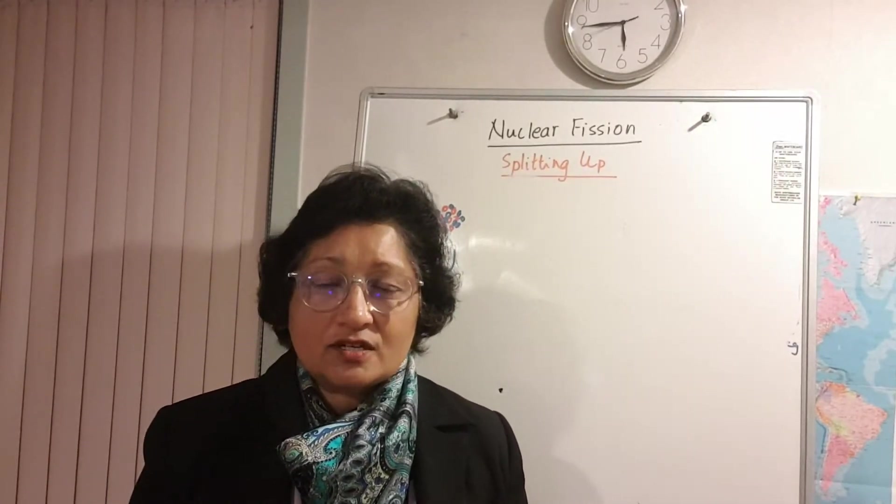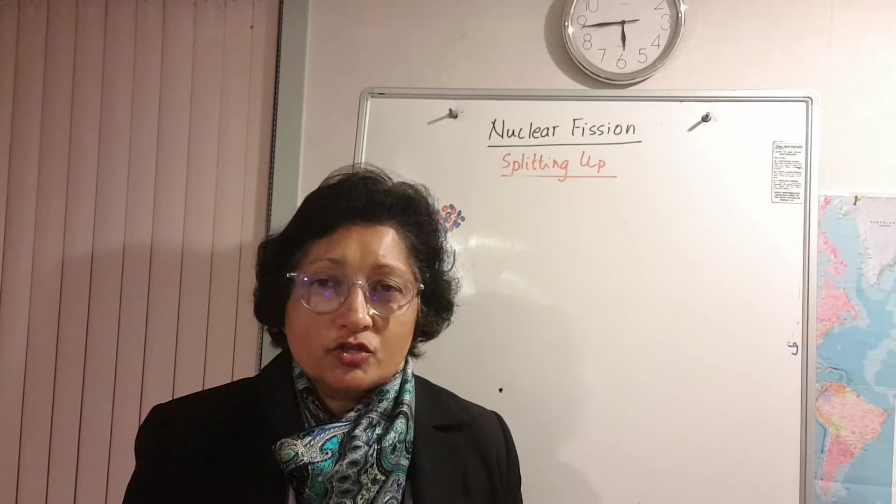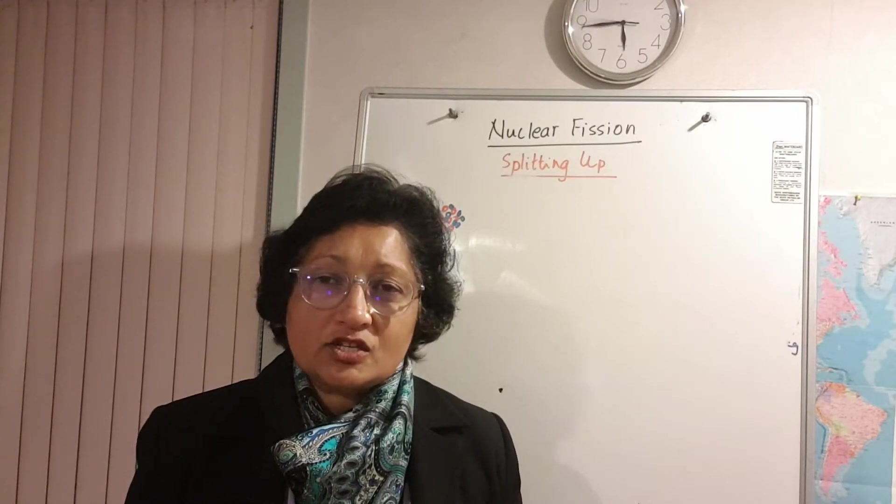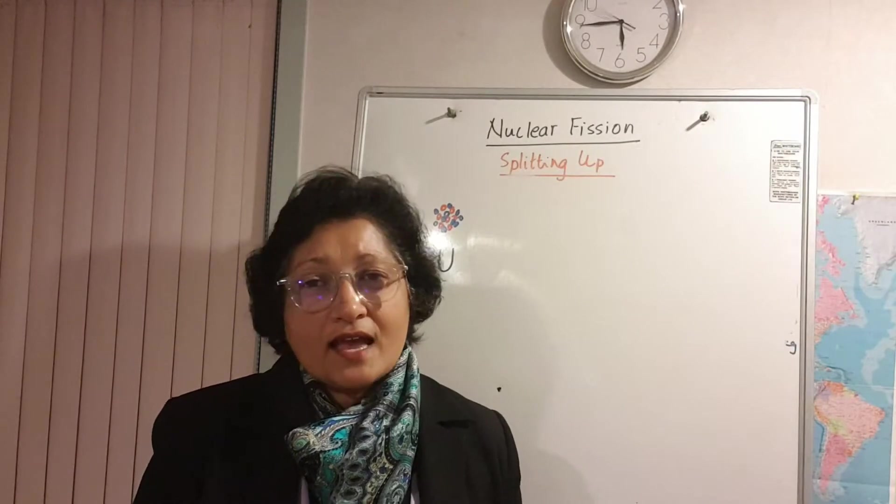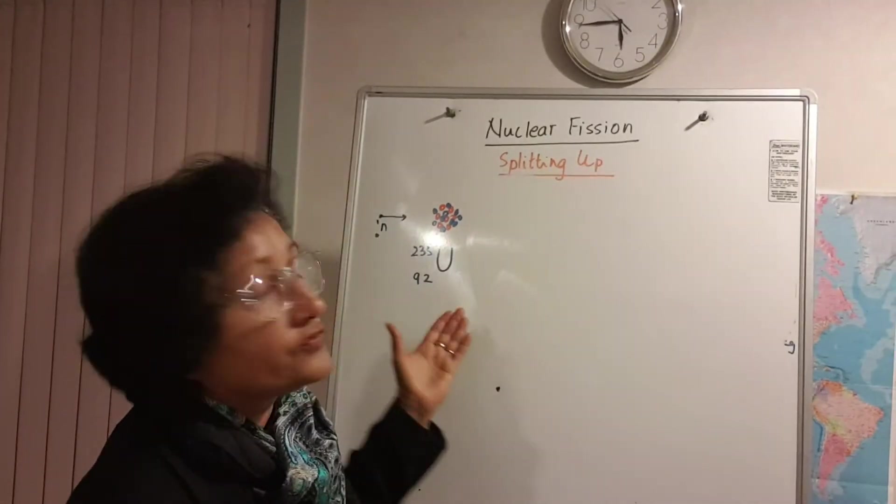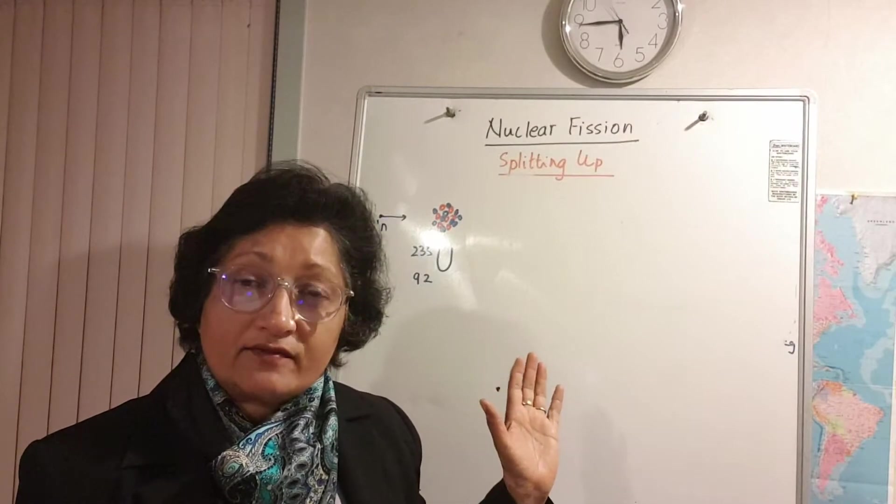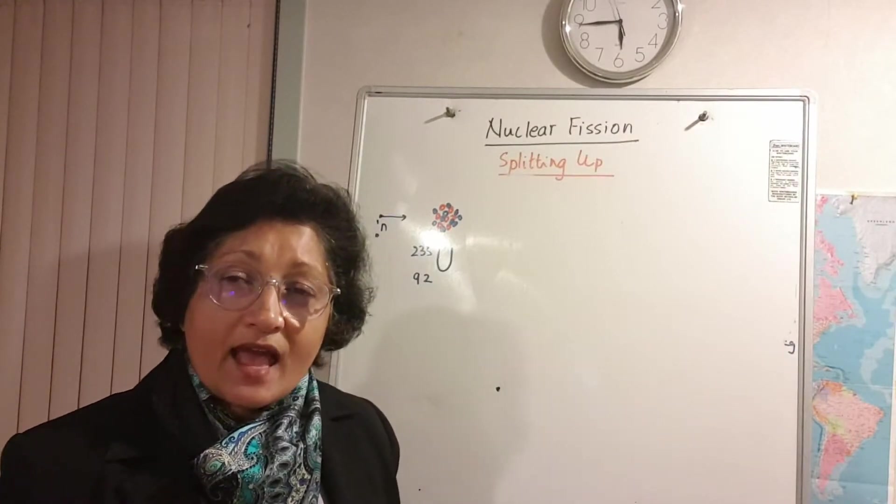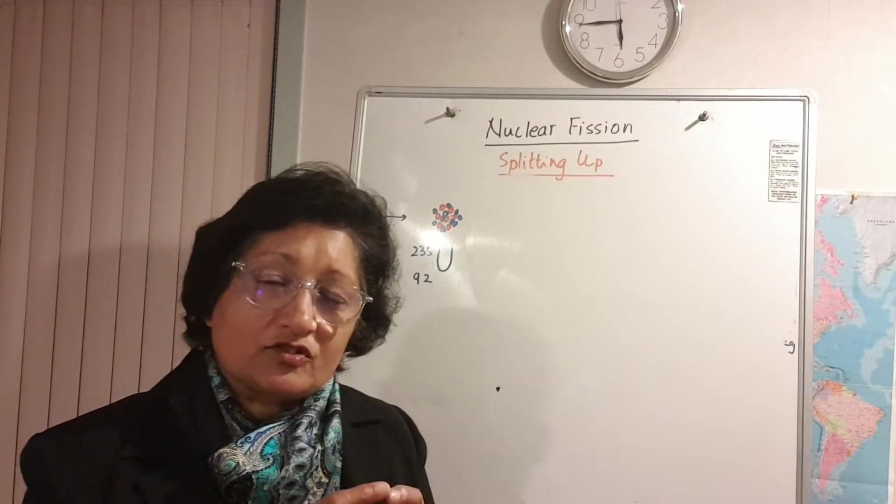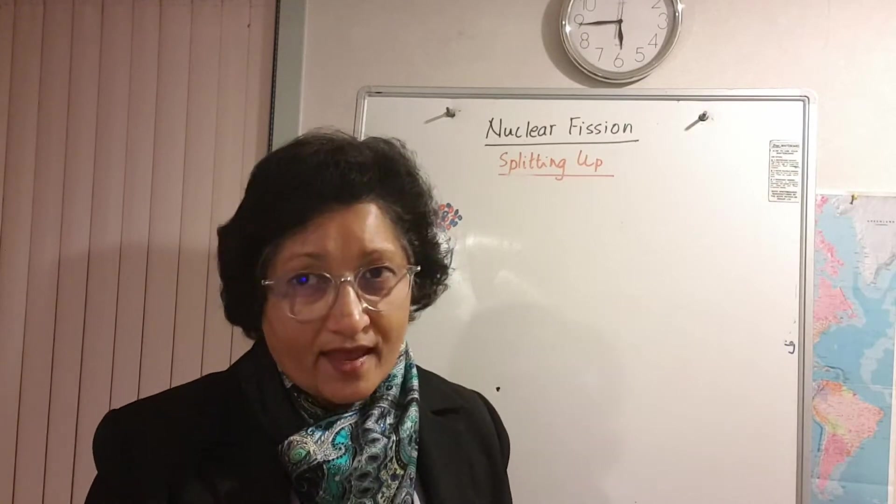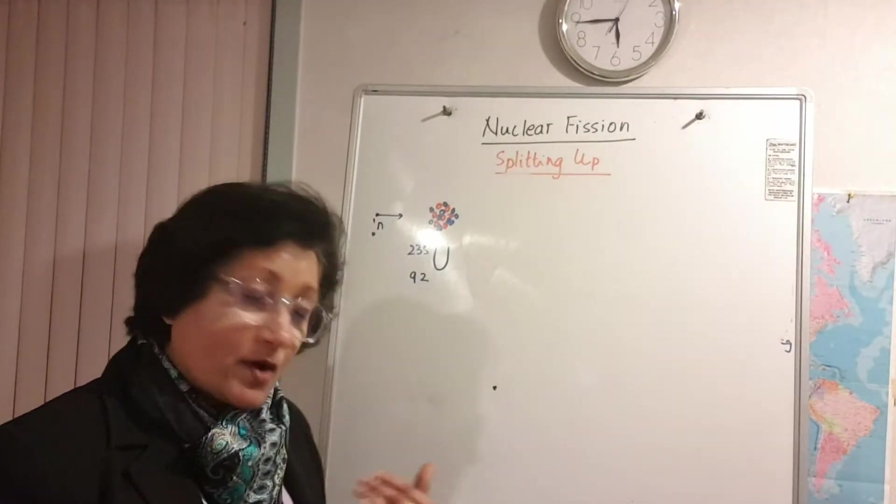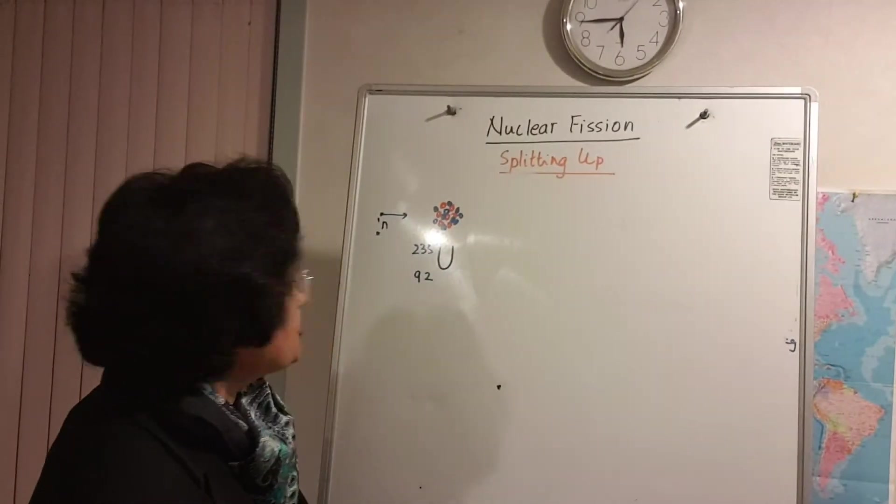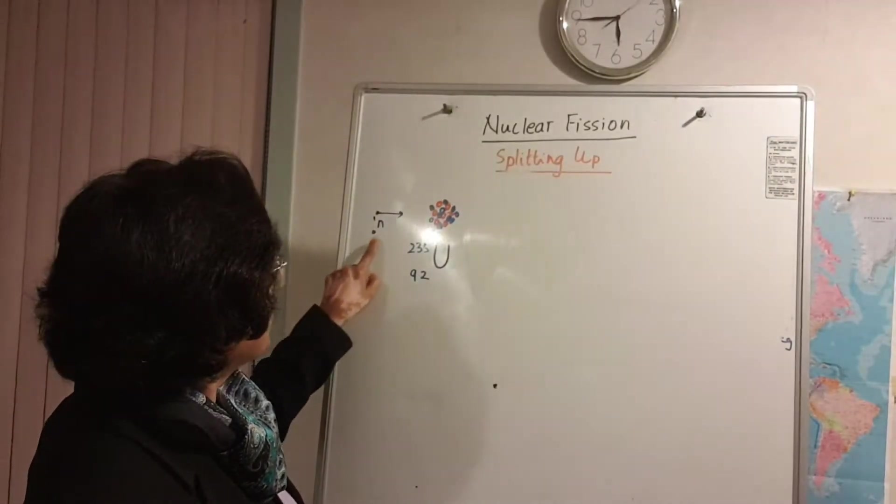Now the word fission means to break apart. So nuclear fission is induced in larger unstable nuclei. For example, the nucleus of uranium-235 is unstable, so the nucleons themselves have quite a lot of energy and it is rendered even more unstable if it captures one slow-moving neutron.